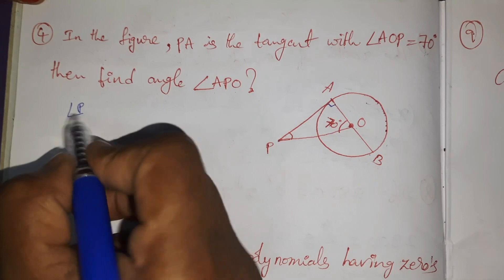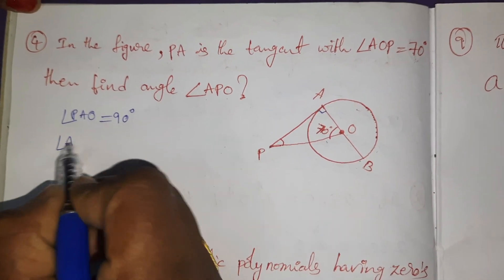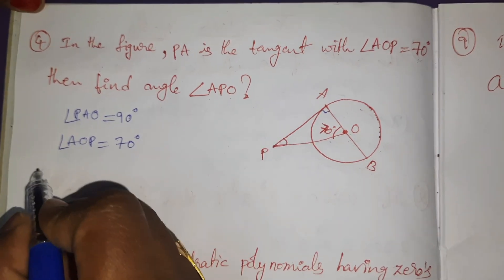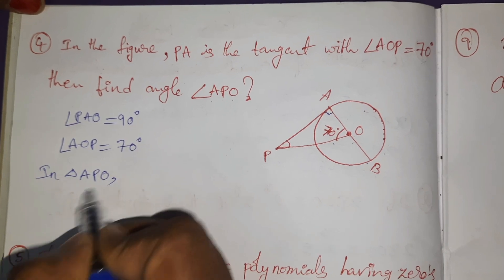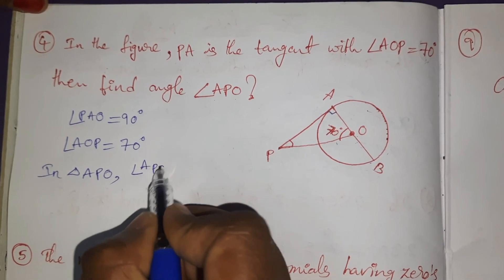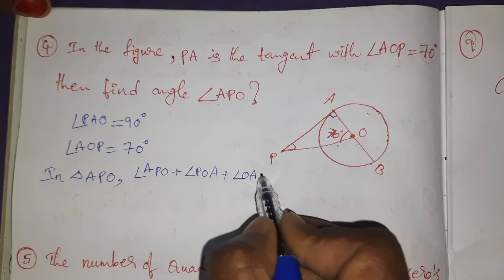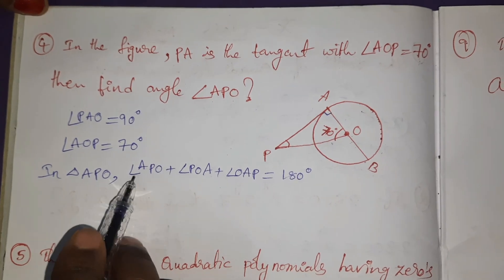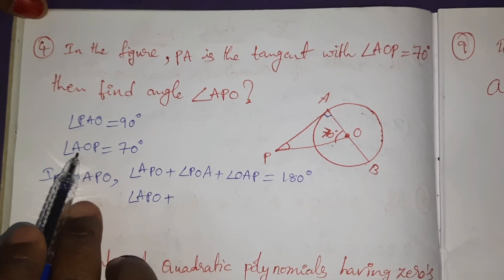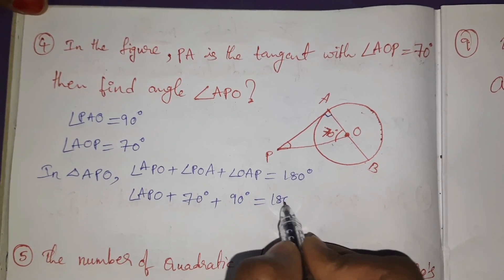And given AOP = 70°. Triangle APO. In triangle APO, sum of all angles equals 180°. Angle APO + angle POA + angle OAP = 180°. Angle APO we don't know as yet. Angle POA is 70°. Angle OAP is 90° = 180°.